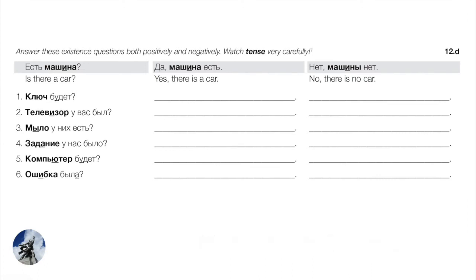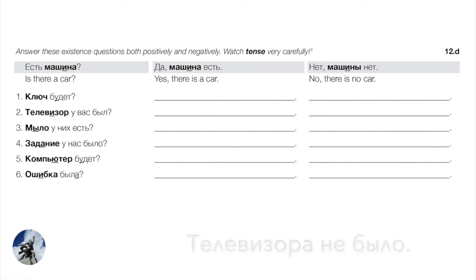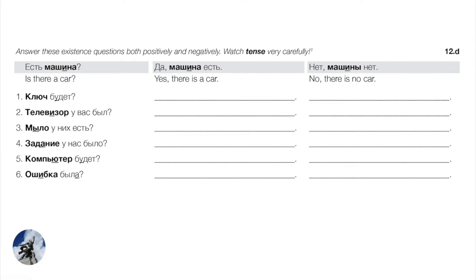Number two — Телевизор у вас был? Did you have a television? Positive: Да, телевизор был. Negatively: Нет, телевизора не было. Note we're saving the new interesting part — the fact it wasn't — for the end of the sentence. We'll talk much more about word order later; for now know that Russian word order is very flexible.